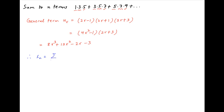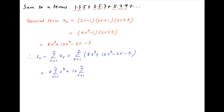Therefore the sum of N terms is equal to the summation of U_R where R goes from 1 to N. Replacing the value of U_R obtained above, this is the summation of 8R³ + 12R² − 2R − 3 where R ranges from 1 to N. This can also be written as 8 times ΣR³ + 12 times ΣR² − 2 times ΣR − 3 times Σ1, where R ranges from 1 to N.